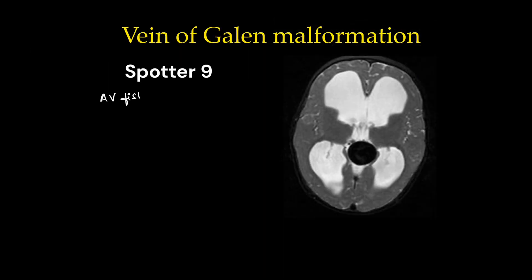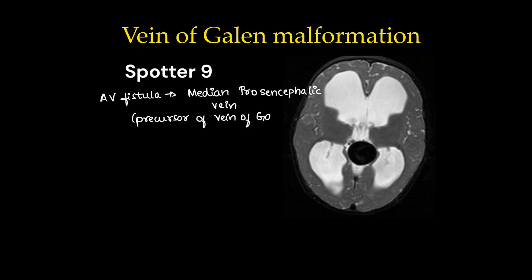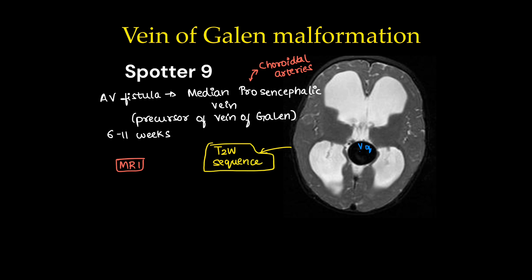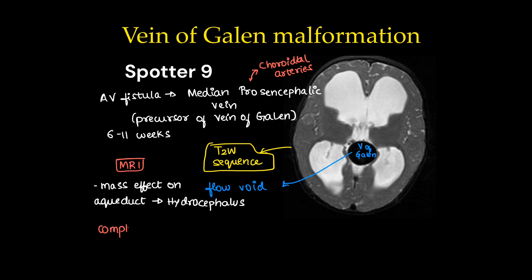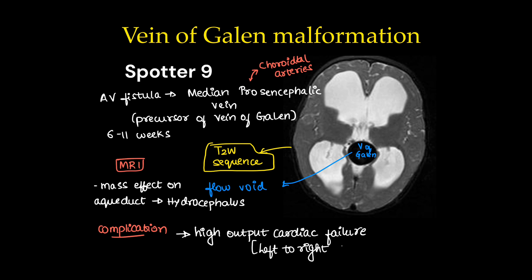Spotter 9 is a vein of Galen malformation — an arteriovenous fistula of the median prosencephalic vein, which is a precursor of the vein of Galen, occurring at 6 to 11 weeks. The arteries involved are the choroidal arteries. On MRI T2 sequence, the vein of Galen is shown in black as a flow void. We can also see mass effect on the aqueduct causing hydrocephalus as a complication. The other symptomatic complication is high-output cardiac failure because it is an arteriovenous fistula.